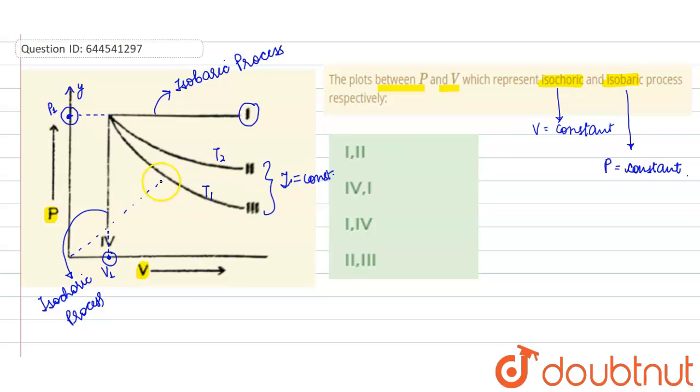you see, the distance of T2 from the origin is greater than the distance of T1 from the origin, so here temperature 2 is greater than temperature 1.